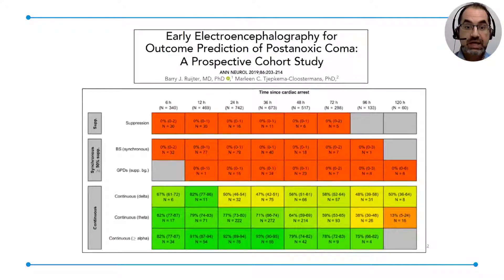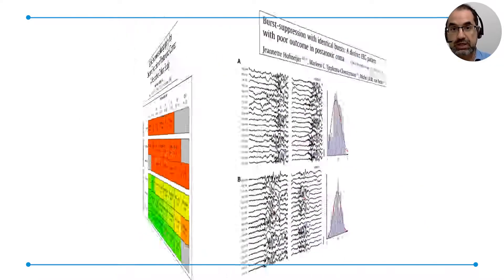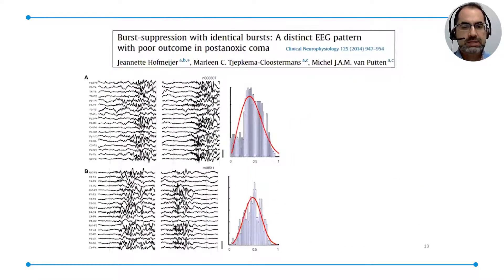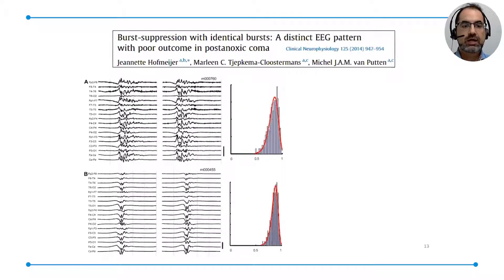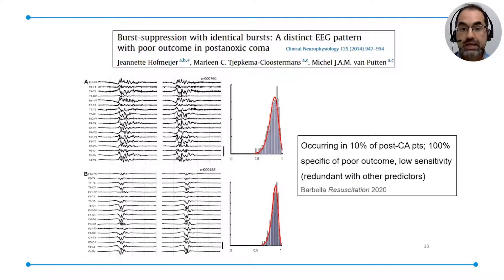If you have EEG, you can really predict the development of the patient — please take into account both outcomes, poor and good, and that's quite new. When we are looking at the EEG, we can end up with burst suppression, and burst suppression doesn't equal burst suppression. On this part of this slide, you have polymorphous bursts where the quantitative analysis is quite heterogeneous, and here you have identical bursts that are more monotonous — these ones are highly predictive of poor outcome. They occur in about 10% of post-cardiac arrest patients.